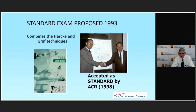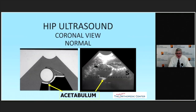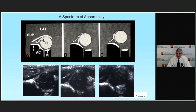In 1998, the American Academy of Radiology agreed to accept both Graf's and Harke's measurement methods. On ultrasound, you want to see at least half of the femoral head within the acetabulum. The images shown demonstrate the femoral head in different relationships to the acetabulum, illustrating how clinical judgments can be made from these views.